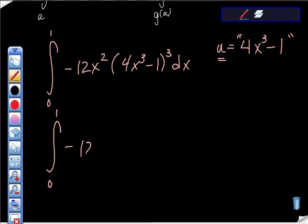So first thing I can do is rewrite this this way. I can't change this interval yet, but I have 12x² and then we have u here, u is equal to this inside piece. So we have u here cubed dx.